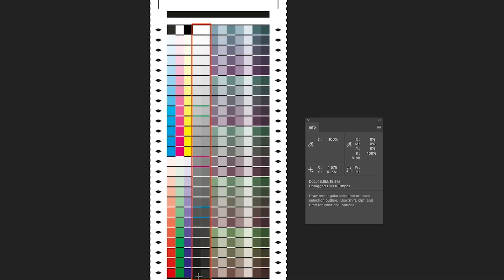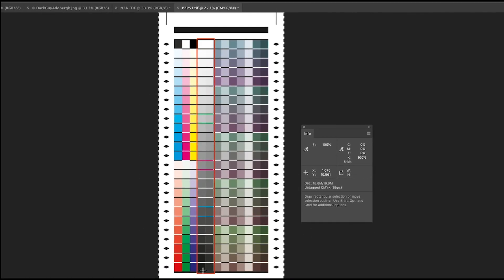These are used to calculate neutral print density curves or used to validate whether or not you're in compliance to your NPDC aims or your good G7 tonality and gray balance, and it's also used to determine whether you're in compliance to G7 Master tolerance.